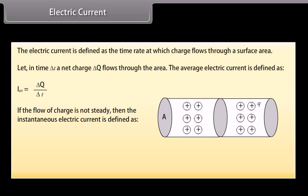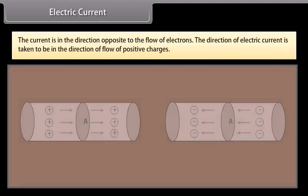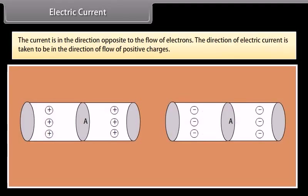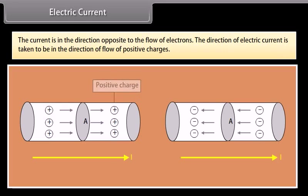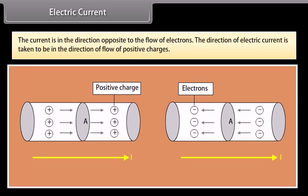The SI unit of current is ampere. The current is in the direction opposite to the flow of electrons. The direction of electric current is taken to be in the direction of flow of positive charges.